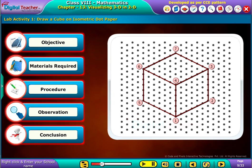Let us do a lab activity on drawing a cube on isometric dot paper. Click each tab to know more.